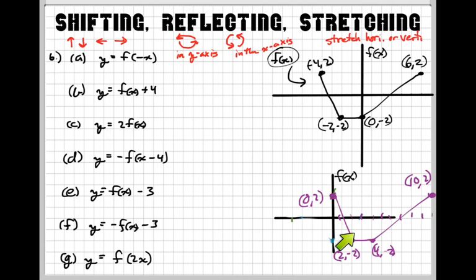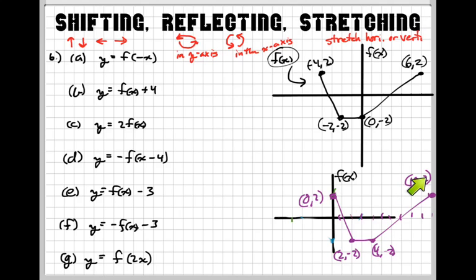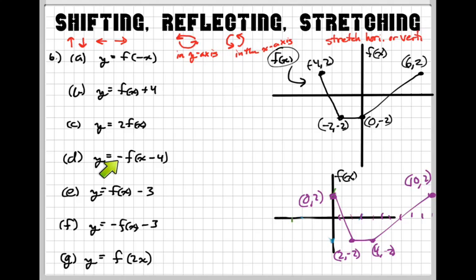Now that's not even the correct graph because I did ignore the negative. Hopefully you guys saw that. But this negative is on the f of x — it's on the f, not on the x. So we're going to take all our f of x values, which are the y's, and change their sign. That would flip our graph in the x-axis from top to bottom. So we have two transformations: moving to the right because of minus 4, and reflecting top to bottom because of the negative sign.